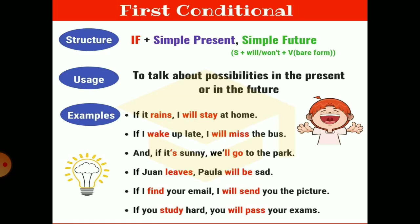Moving further towards the first conditional, we will now study about first conditionals in detail. The structure is: if + simple present + simple future. That means: subject + will or will not + first form of verb. It is used to talk about possibilities in the present or in the future. Examples: if it rains, I will stay at home. If I wake up late, I will miss the bus. If I find your email, I will send you the pictures. If you study hard, you will pass your exams.